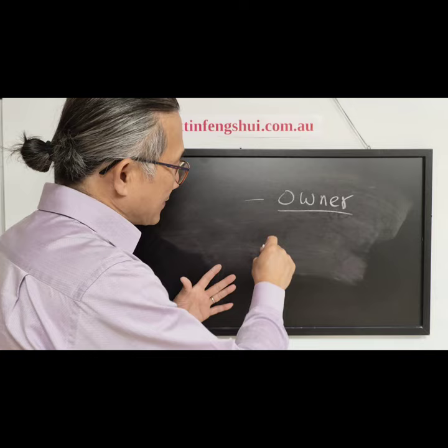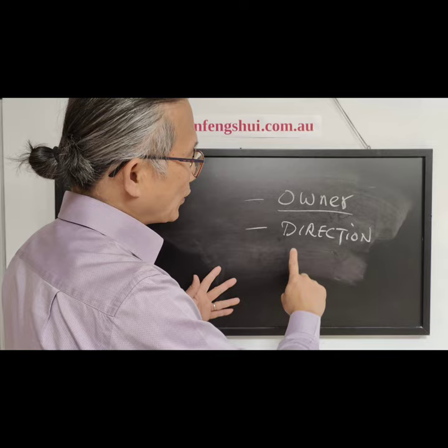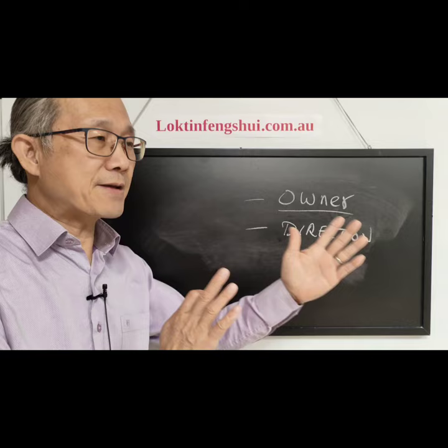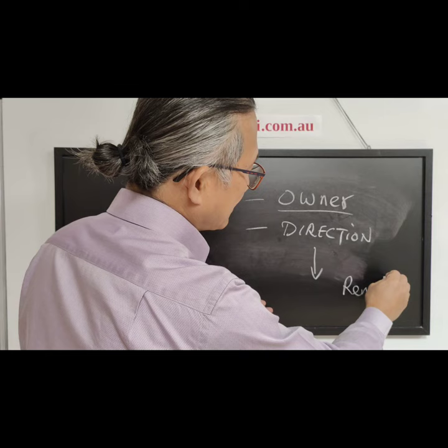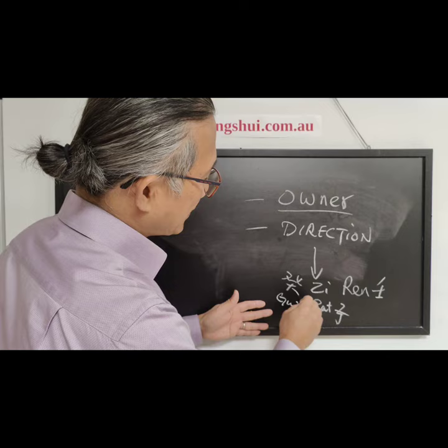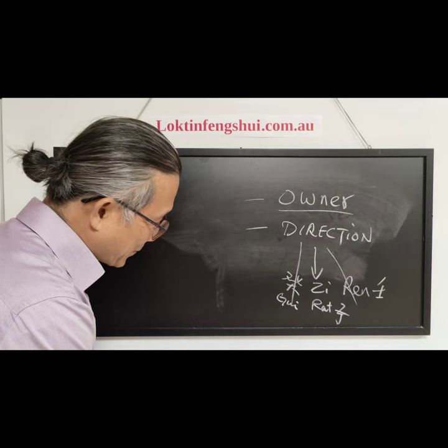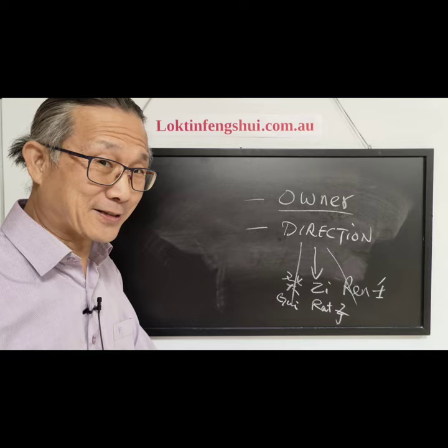The second consideration is the direction. In feng shui, we don't just say 'facing north' — because north covers 45 degrees, there are three mountains. For example, in north there is Ren, Zi (rat), and Gui — so Ren Zi Gui, three different facings. Some people say 'my house is facing north' and I normally ask them, which north? What degree? That's the direction we have to look at.